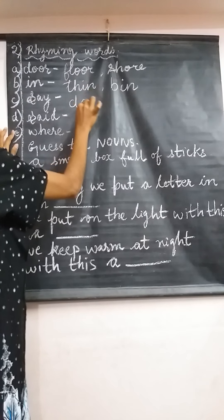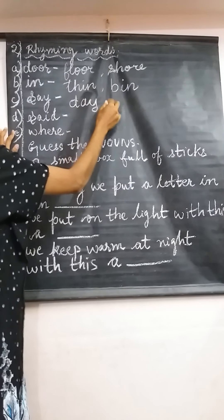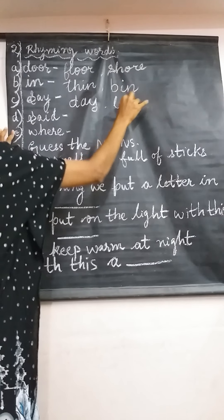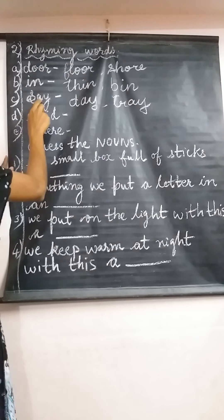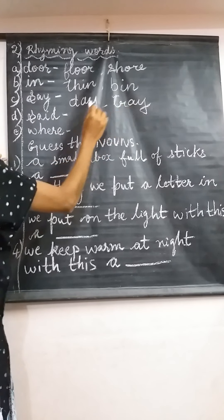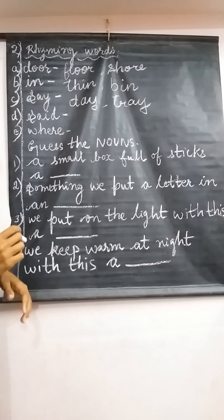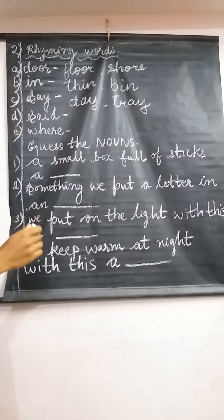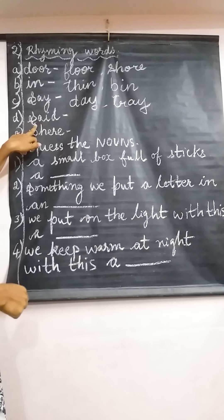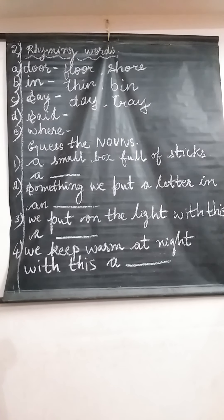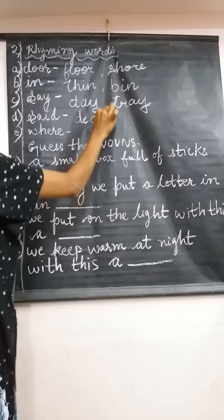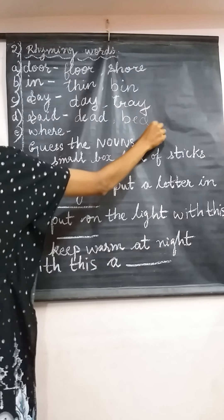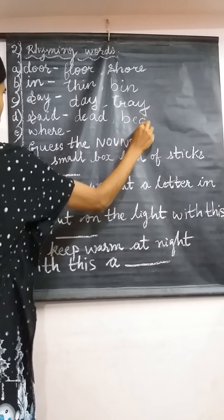Moving to the next word: 'same'. A rhyming word could be 'trade' — wait, let's check. The ending sounds are the same as the given word 'same'. Next, we have the word 'said'. What will be the rhyming word of 'said'? We can write 'dead', 'head', and so on.